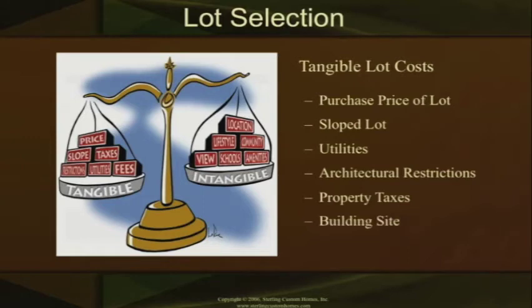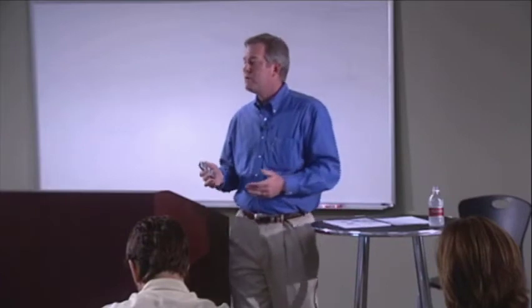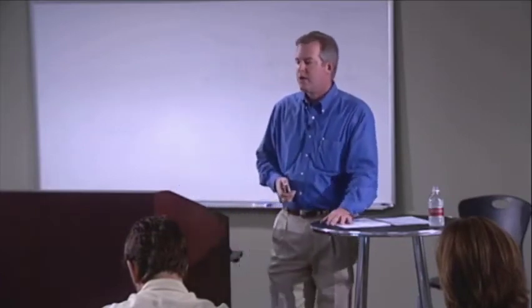The building site may be an area full of trees that we've got to take out, or it's going to require a bunch of retaining walls. All of those are functions of price to that lot. The subdivision-related fees — whether it's in an HOA, a homeowners association, or a POA, a property owners association — and those monthly fees, all of that factors into the tangible lot cost.